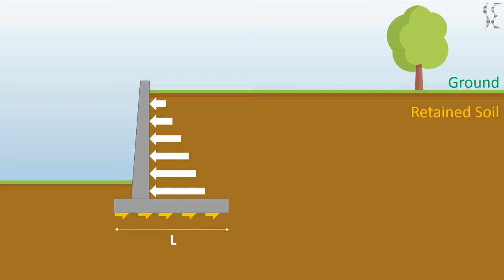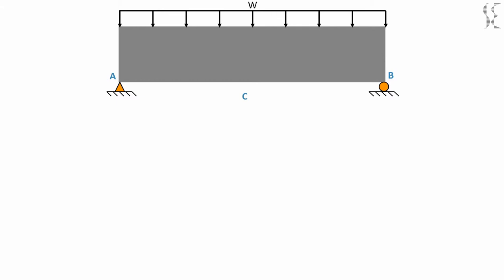Now let's see how shear forces vary along a concrete beam loaded with uniform load W supported on points A and B. If we write the equilibrium equations along vertical direction, we will get the support reactions VA and VB as WL by 2.